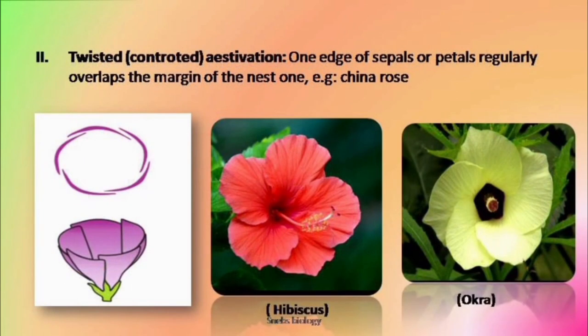The second arrangement is known as twisted aestivation. In twisted aestivation, one margin is in — overlapped — and the other margin overlaps; we write it as in and out. In all of these sepals, one margin is in and out, in and out. This type of arrangement is known as twisted aestivation and is a very characteristic feature of the Malvaceae family — seen in China rose, okra, Gossypium, etc.